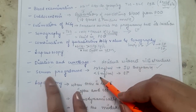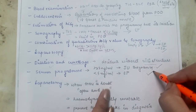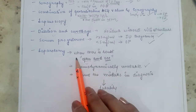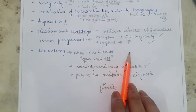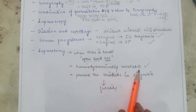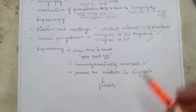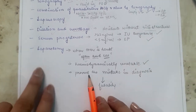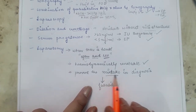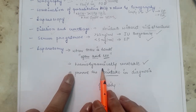Serum progesterone: level above 25 ng/mL indicates intrauterine pregnancy; below 5 ng/mL indicates ectopic pregnancy. Laparotomy (abdominal incision) is used when diagnosis is difficult or the patient is hemodynamically unstable — when features of shock are present — as a quick method to diagnose and treat tubal pregnancy to prevent the patient's death.